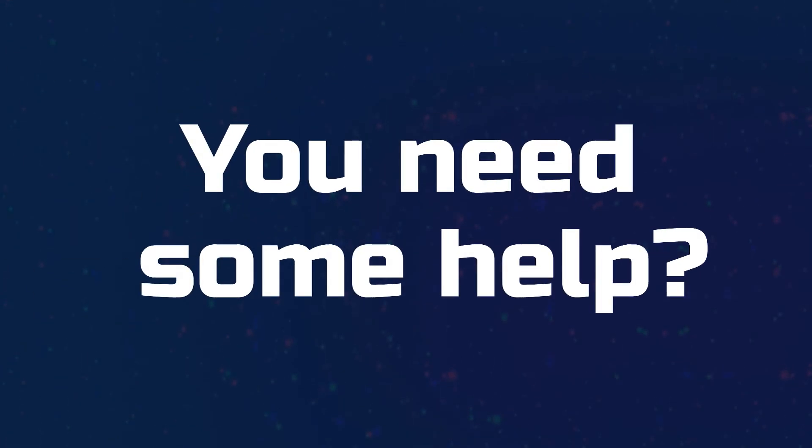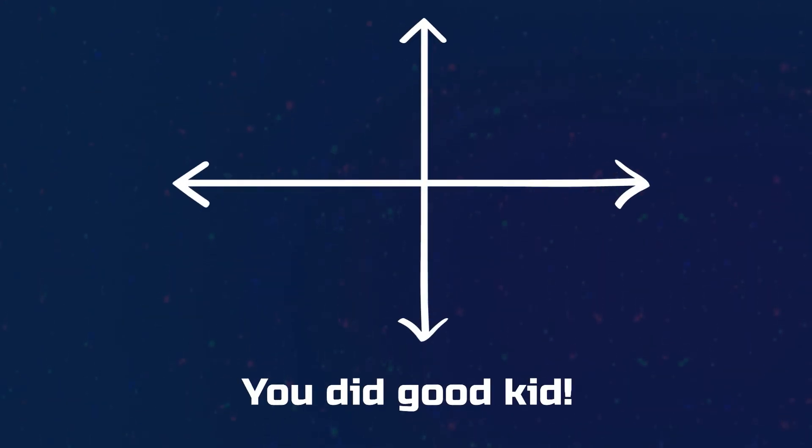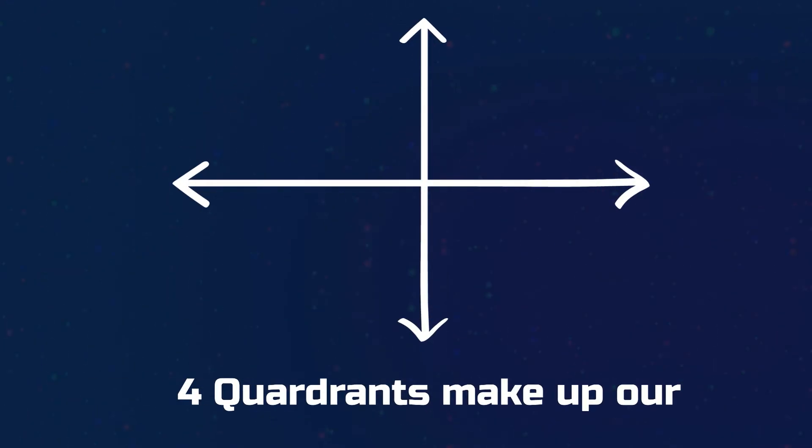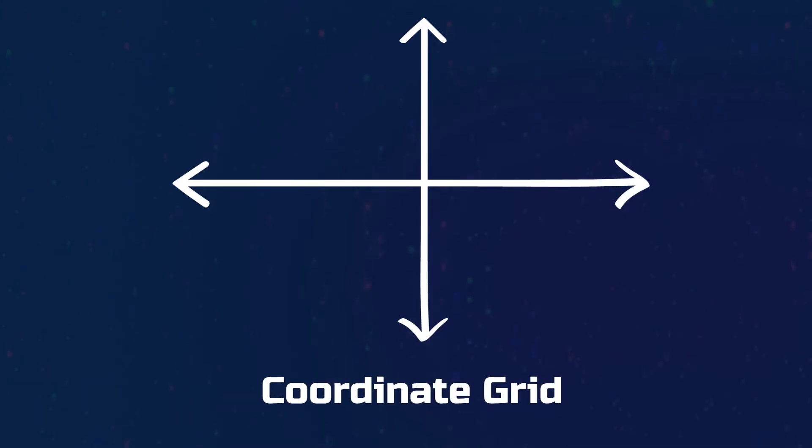You need some help? You came to instruct the beats, you did good kid. Four quadrants make a bar, coordinate grid.